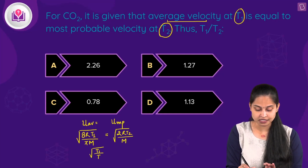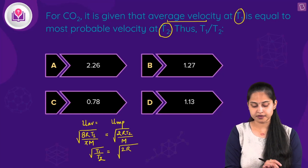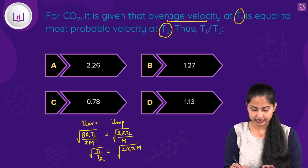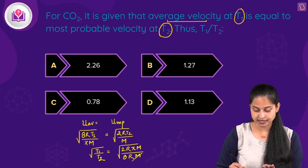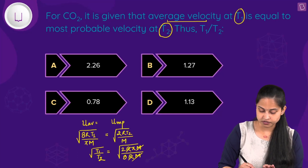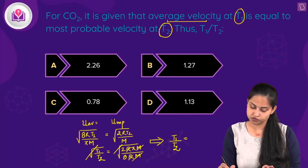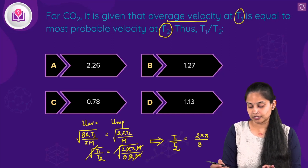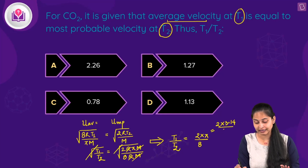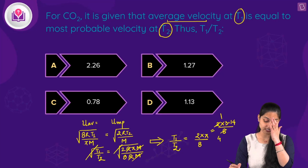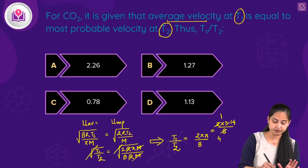Solving: √(T1/T2) = √(2πm / 8m). After canceling m, R, and the square roots, we get T1/T2 = 2π/8. Taking π as 3.14, this becomes 2 × 3.14 / 8, which gives approximately 0.78.